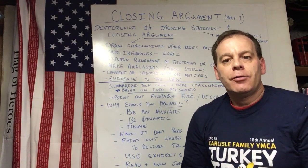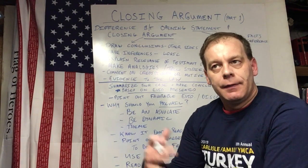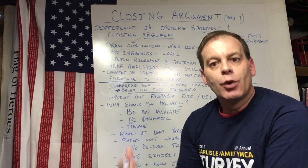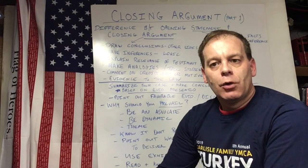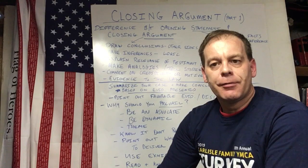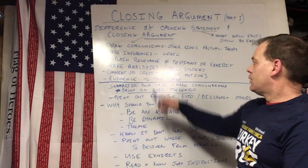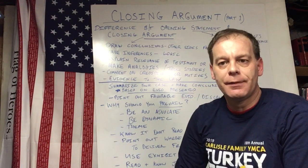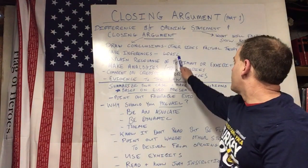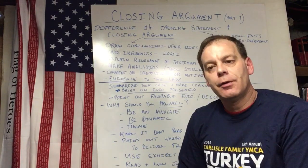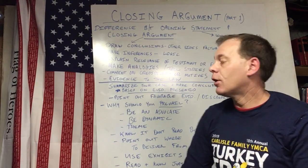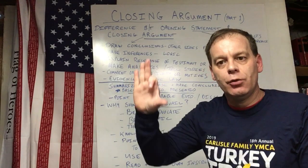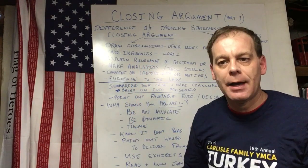You wouldn't get into inferences in your opening statement. You will say in your opening statement that the evidence is going to show that the defendant is guilty or not guilty — that's part of what you anticipate your case will be about. But in your closing argument, you get to do different things. One of the most important things is you're going to draw conclusions based on the evidence that's been presented, talk about the other side's factual theories, support your factual theory, and draw conclusions that disprove their factual theory.